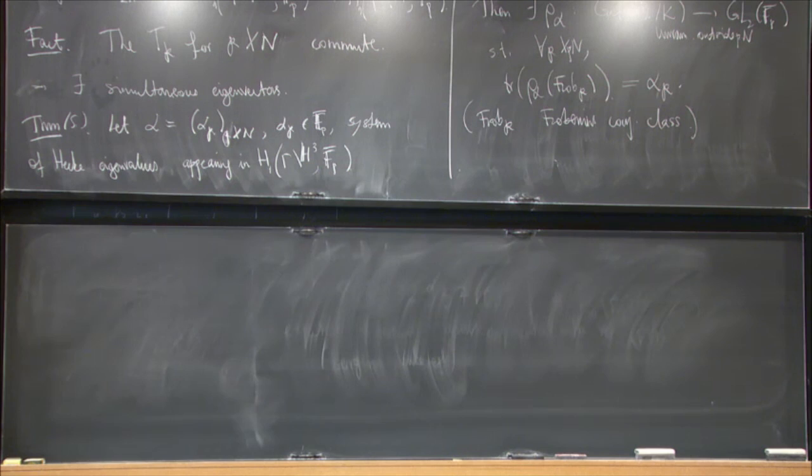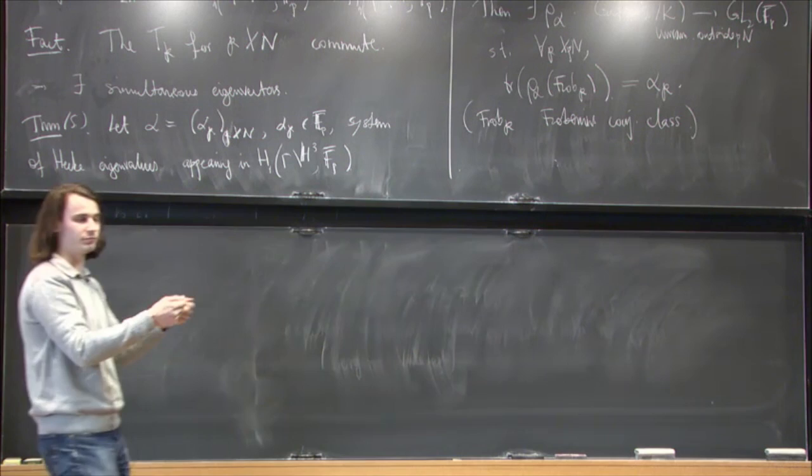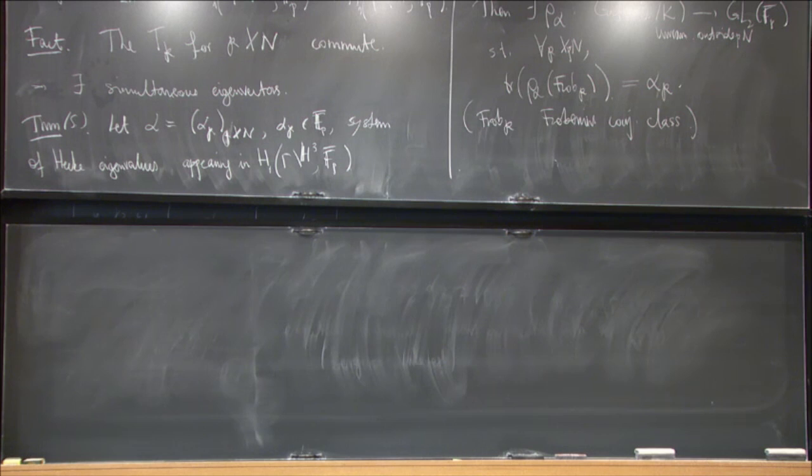So, because there exists very big sporadic primes for which there is some actual torsion, and this means that there are also, this gives examples of very large sporadic Galois representations, which are unramified at only a few primes. Some are really about certain sporadic phenomena.